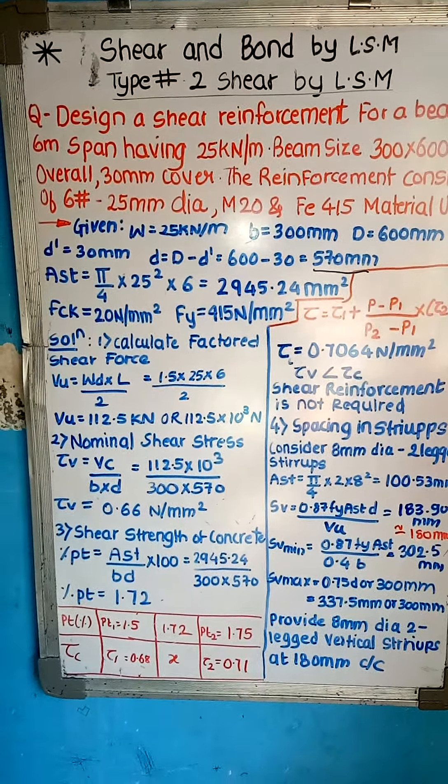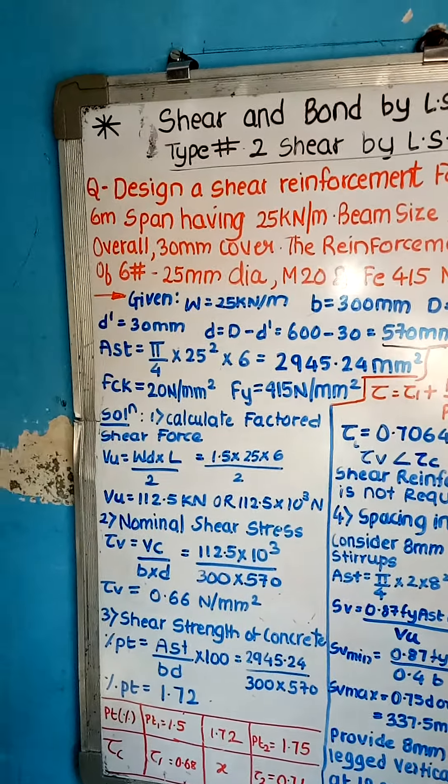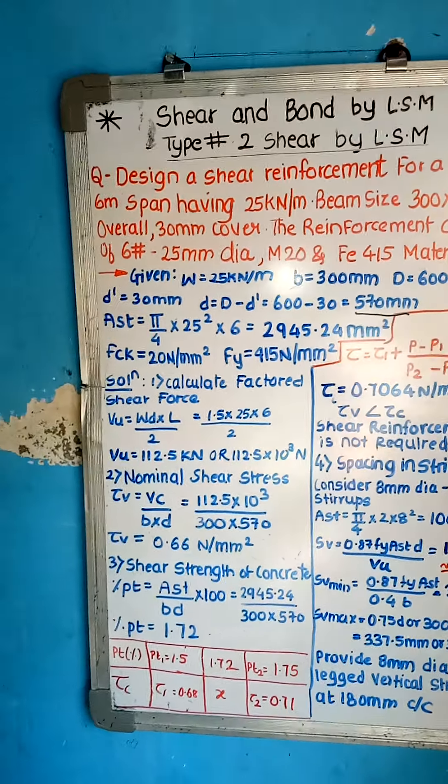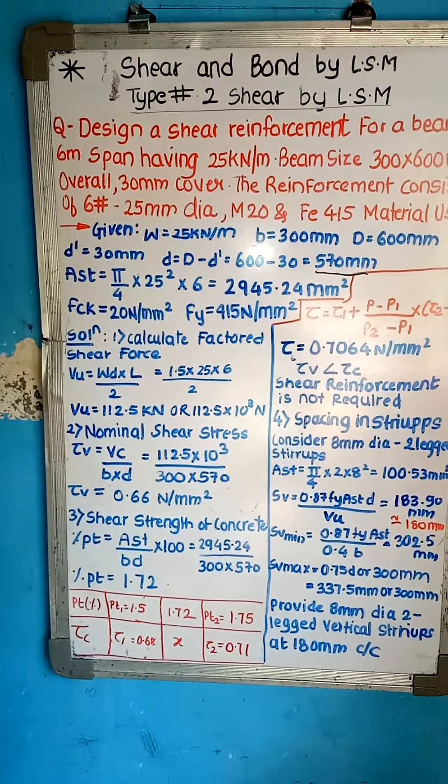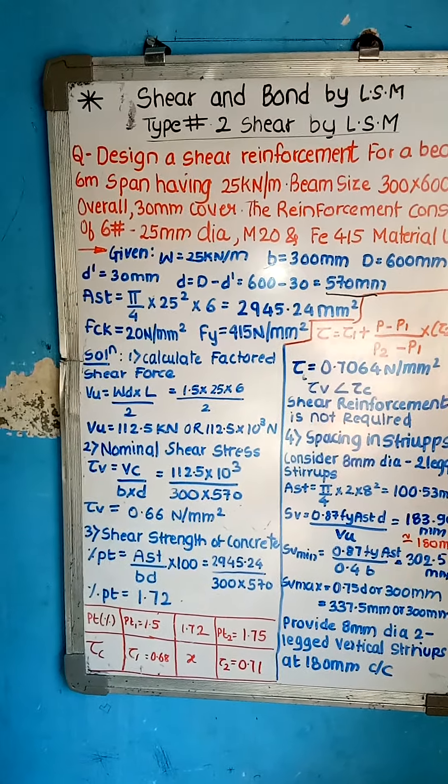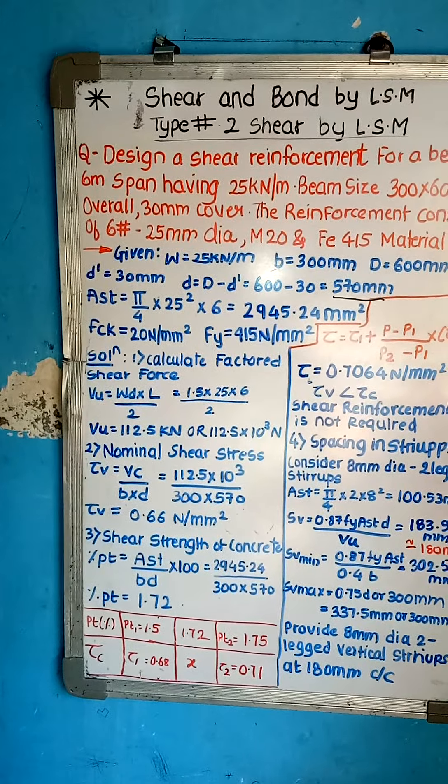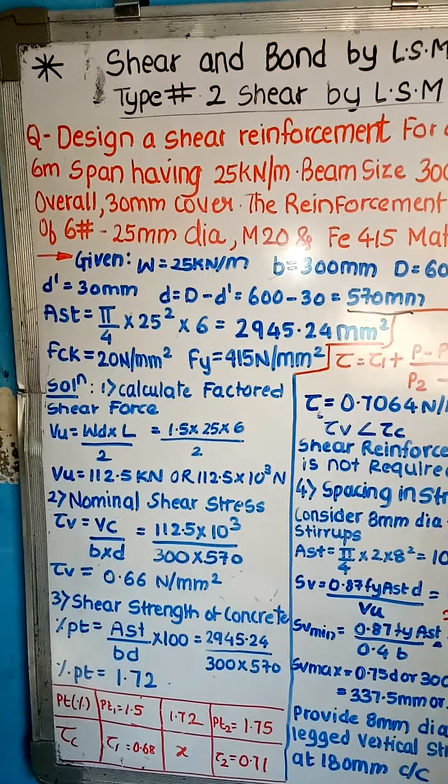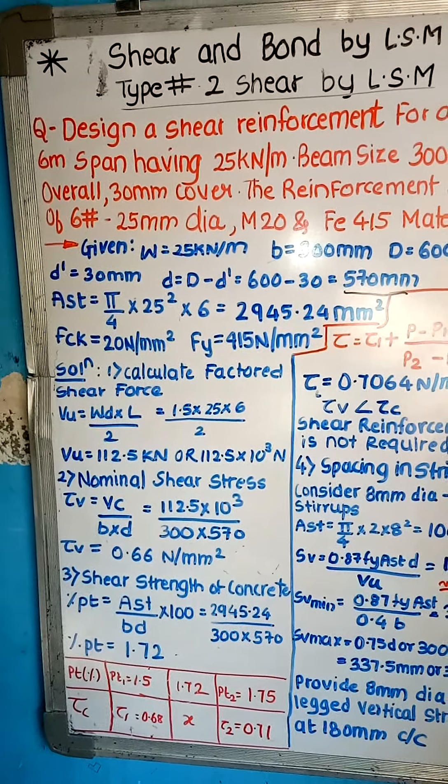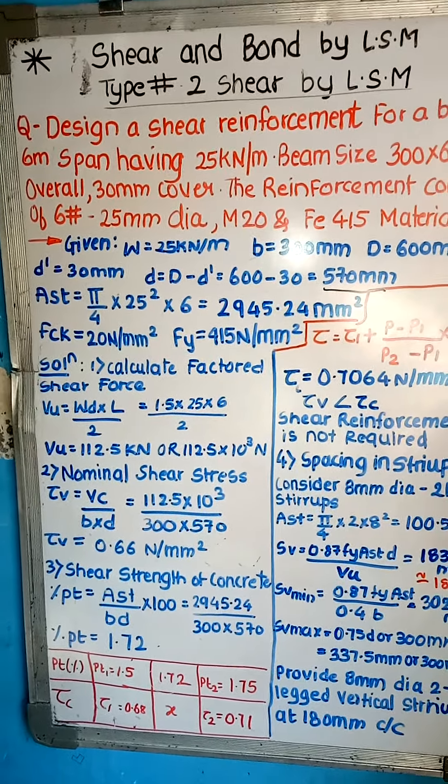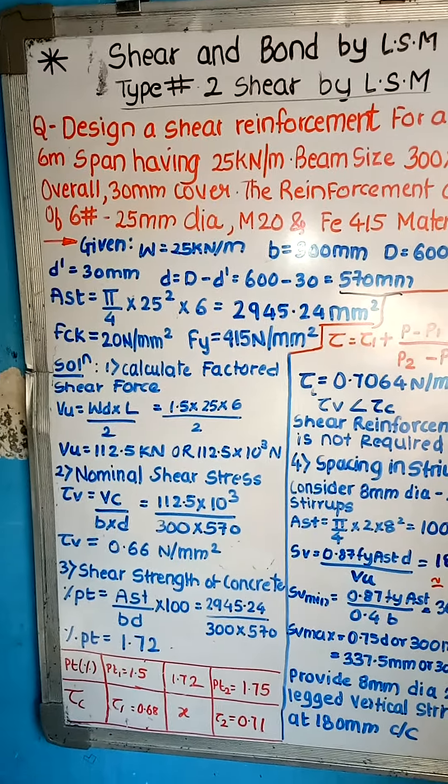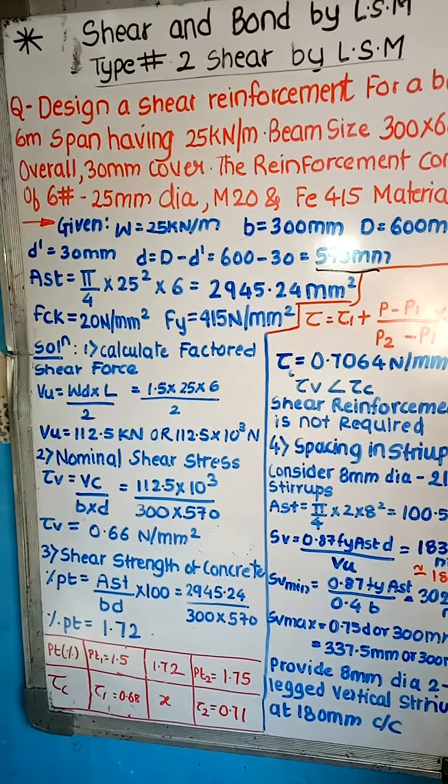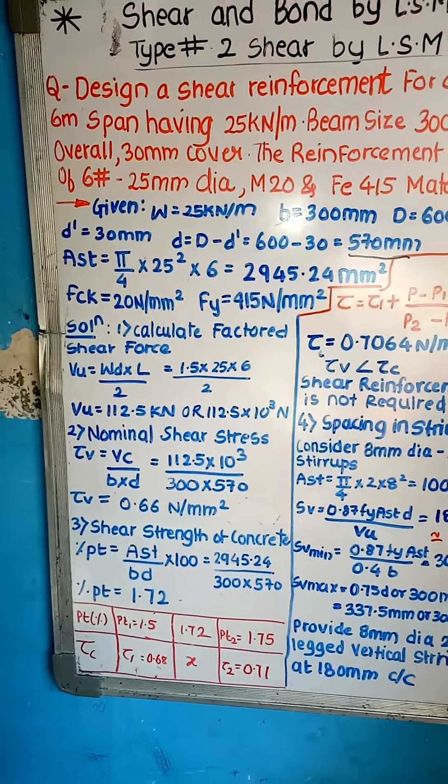Now solution Step number 1: Calculate factored shear force. We are assuming shear force for simply supported. So VU formula will be WDU into L by 2. To get WDU we have to use safety factor, which is 1.5 gamma F, 1.5 multiply by the load given which is 25. That becomes factored load. Into length which is 6 meter divided by 2.